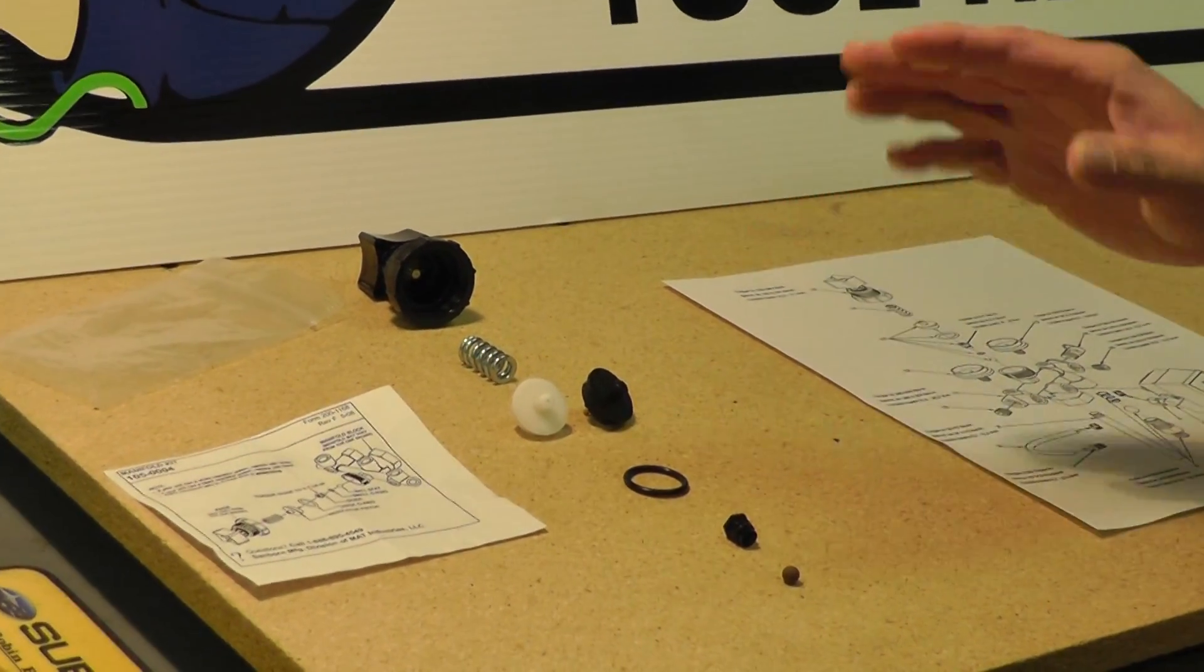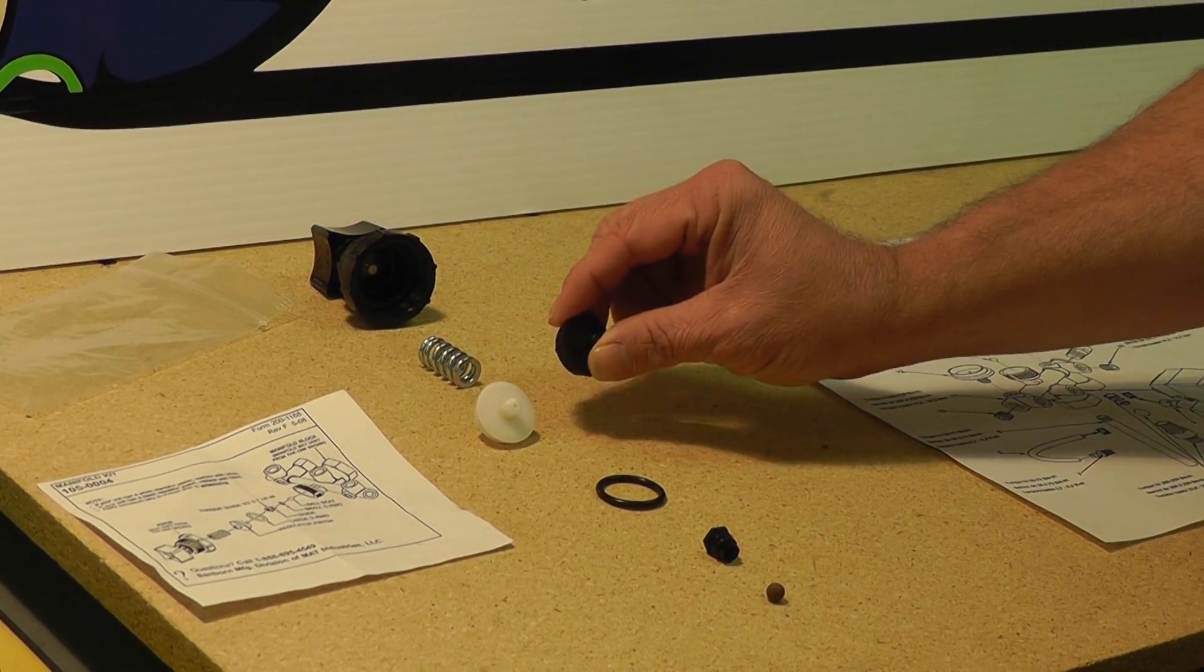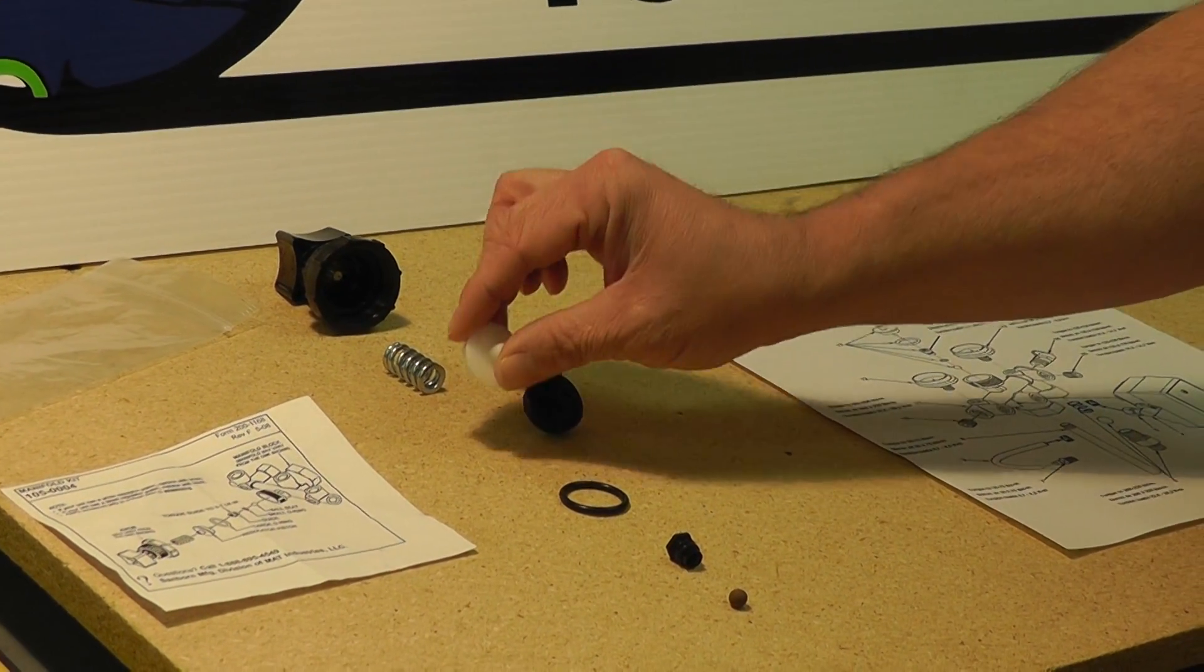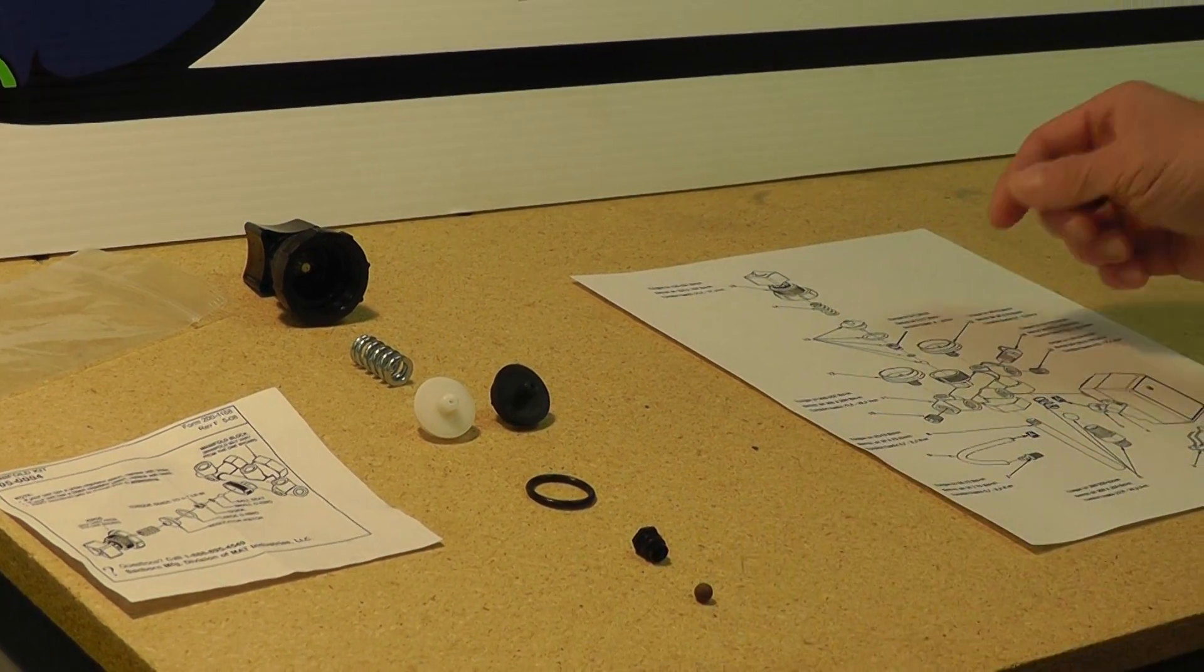Now, if you have yours already, you'll know what color to replace it with. If you pull a black one out, you put the black one back in. If you pull the white one out, you put the white one back in. In some cases, I've had customers say it just blew off and they don't have any of the parts at all.